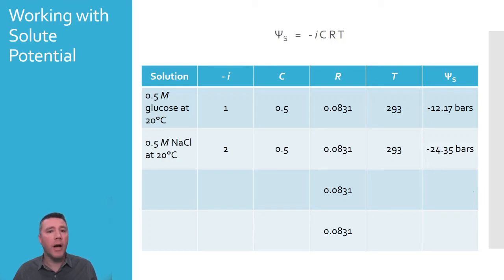If these two solutions were on either side of a membrane, water would flow from an area of higher water potential, which is the glucose, to the area of lower water potential, which is the sodium chloride. After all, negative 12.17 is greater than negative 24.35.